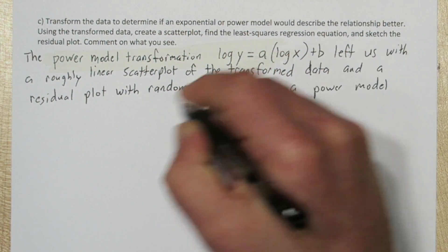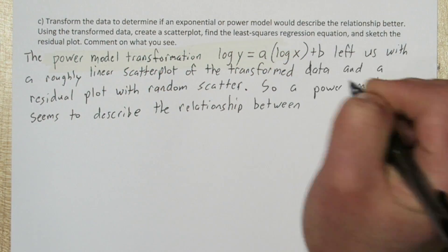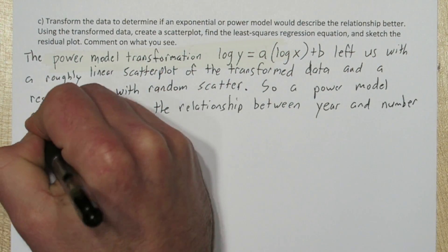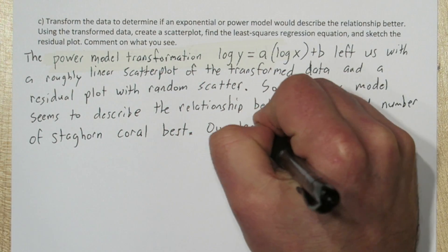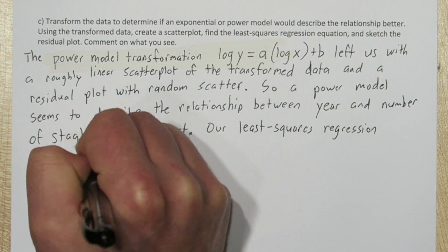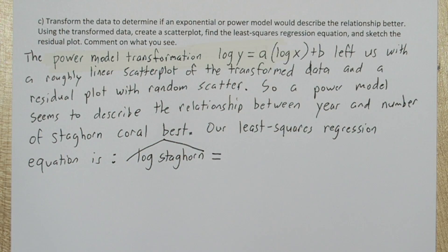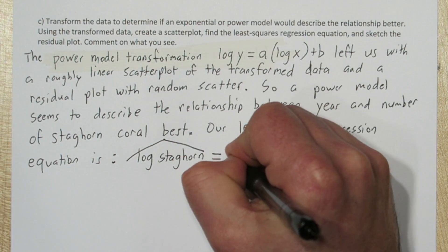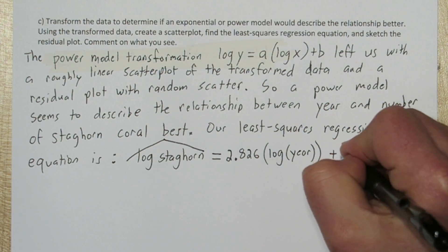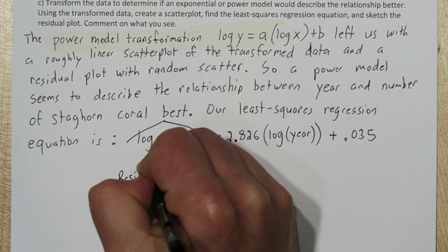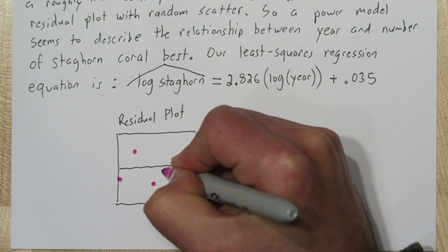So it appears the best model for this data is a power model. A power model transformation, log y equals a times log x plus b, left us with a roughly linear scatterplot of the transformed data and a residual plot with random scatter. So a power model seems to describe the relationship between years and number of staghorn coral best. Our least squares regression equation is: predicted log of number of staghorn coral equals 2.826 times the log of the year plus 0.35. And here's a sketch of our residual plot showing the random scatter.